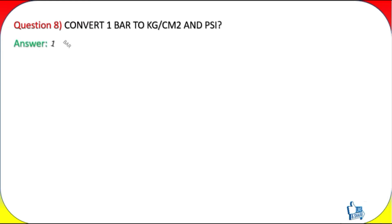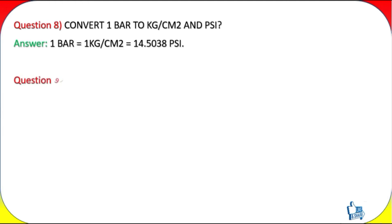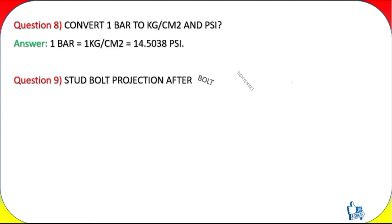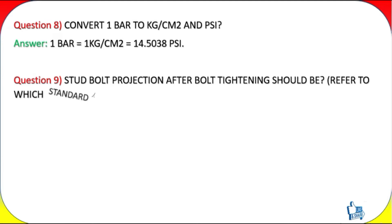Question 8: Convert 1 bar to kg/cm² and psi. Answer: 1 bar equals 1 kilogram per square centimeter, which equals 14.5038 psi.